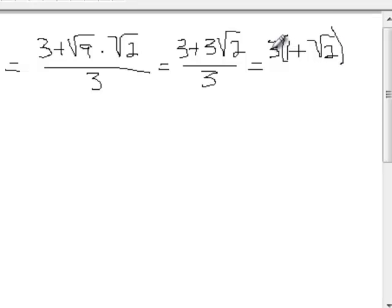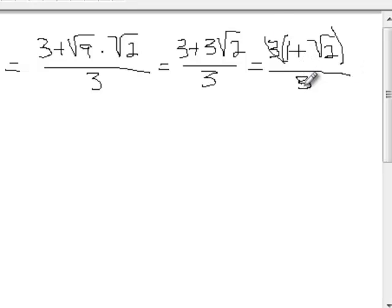So in the numerator, we get 3 times the quantity 1 plus square root of 2 all over 3. Then the 3's will cancel.